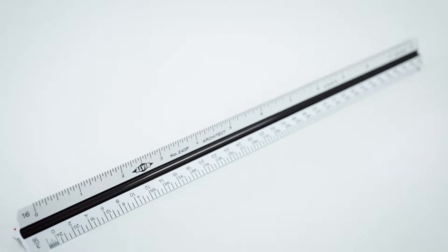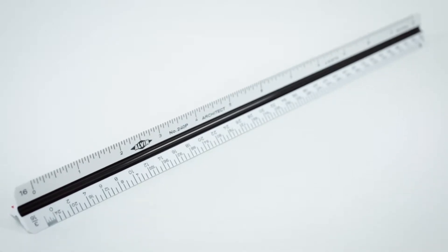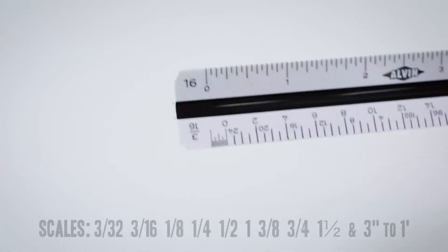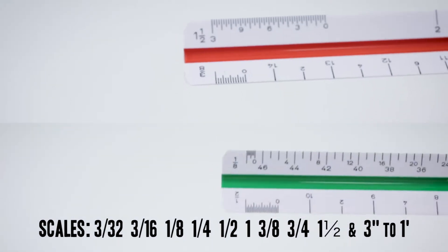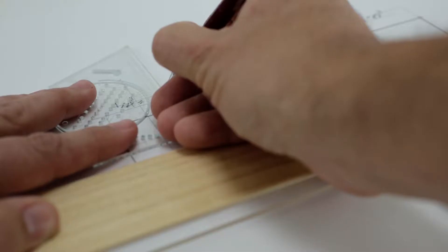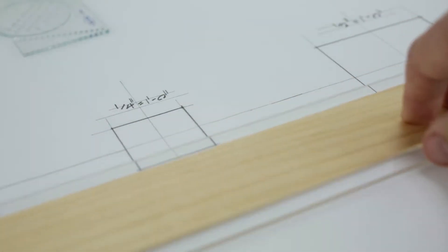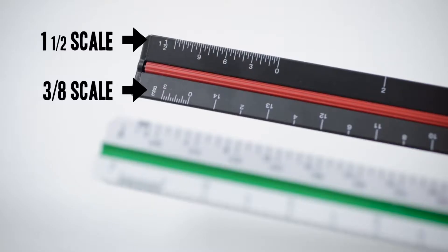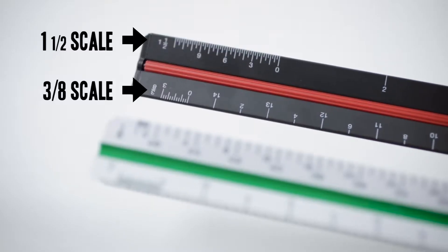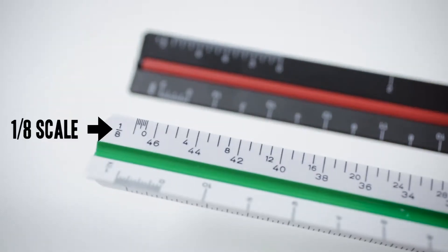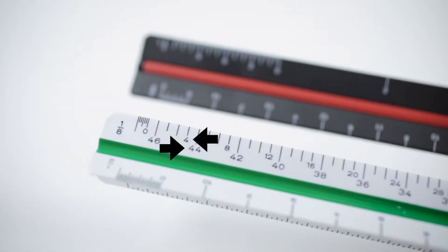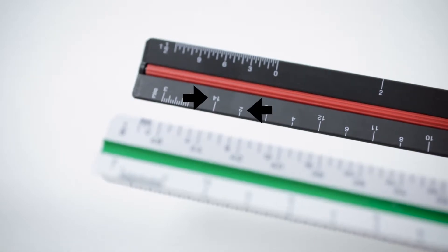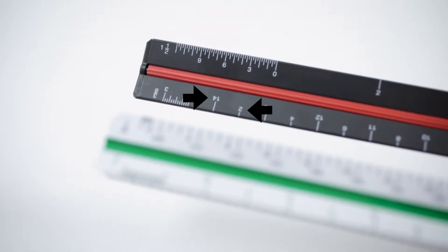This is an architect's scale. This one is 12 inches long. Each 12-inch scale has six sides — that's 12 different scales. A scale essentially converts different lengths into feet. The numbers on the side tell you what scale you're using. You'll notice two sets of alternating graduations on each side, because there are two different scales per side.